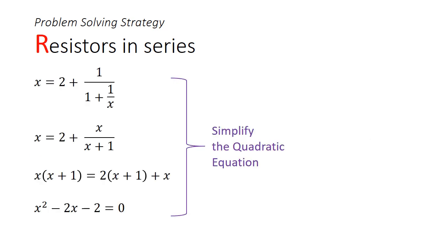Next, it's just to do some simple quadratics and simplify the quadratic equation to get x squared minus 2x minus 2 equals to 0.